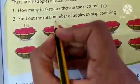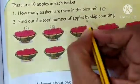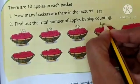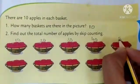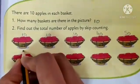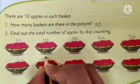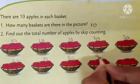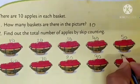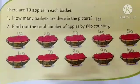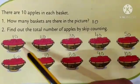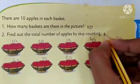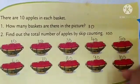10, 20, 30, 40, 50, 60, 70, 80, 90, 100. Look. We skip 10 times. So, we got how many apples? Total there are 100 apples.